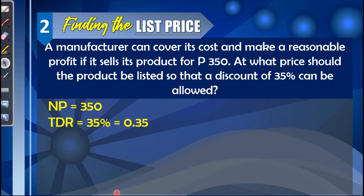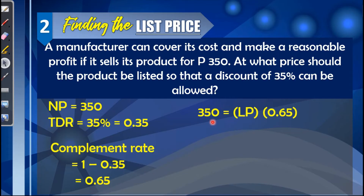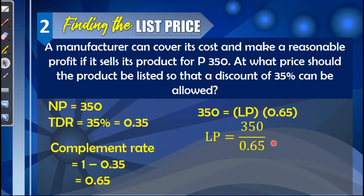First, identify the complement rate: 1 − 0.35 = 0.65. Next, substitute the values into the formula — net price equals list price times complement rate. Then divide both sides by 0.65 to solve for the list price: 350 ÷ 0.65 = 538.46. So the product should be listed at 538.46 pesos.